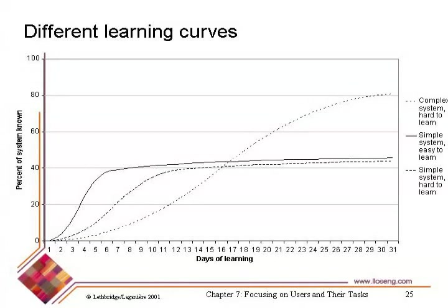You might have heard of 'steep learning curve.' That term is used incorrectly. A steep learning curve is actually good — it means you're learning faster. This curve here is the steepest one, meaning they're learning fast. When people talk about a 'steep learning curve' colloquially, they mean they're having a hard time learning, but historically the popular press adopted it to mean difficulty, which is not what it's supposed to mean. Difficulty learning is actually a shallower learning curve.